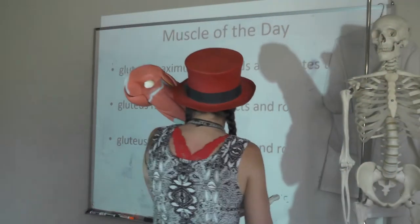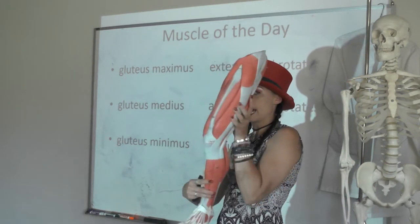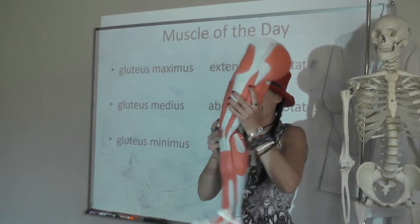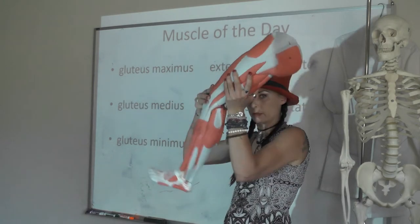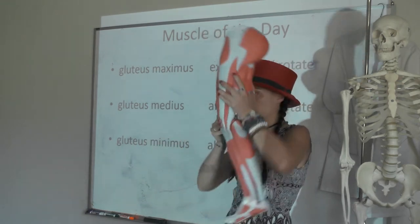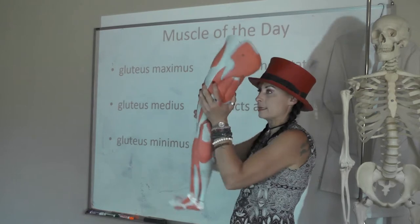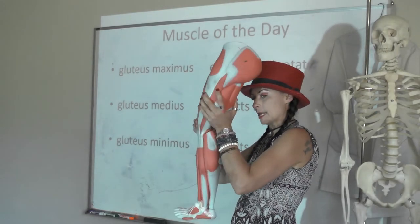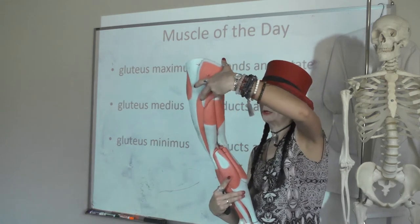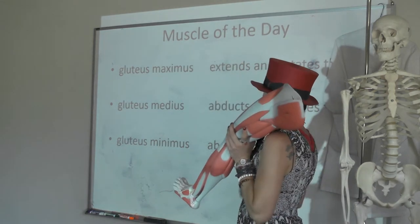Gluteus maximus extends and laterally rotates the thigh. If your thigh is flexed, your gluteus maximus extends it — it's actually very forceful and really good for going upstairs. It extends the thigh, laterally rotates it, and also helps with thigh abduction.